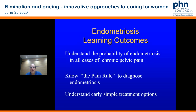Just looking at endometriosis as a subgroup — understanding the probability of endometriosis in all cases of chronic pelvic pain, knowing the pain rule on your cheat sheet. Just remember: ask those four questions, score greater than five, you'll pick it up quite easily. Then understand some early and simple treatment options for it.